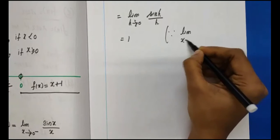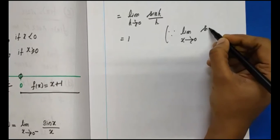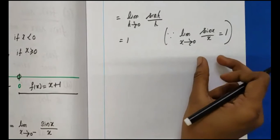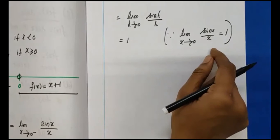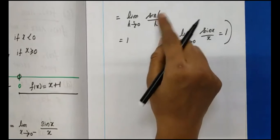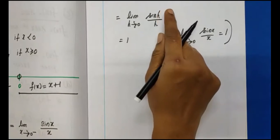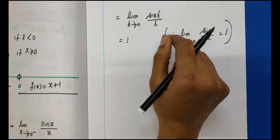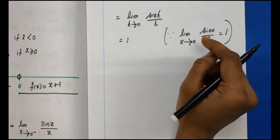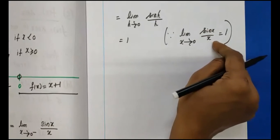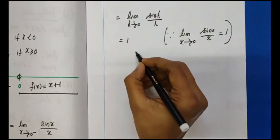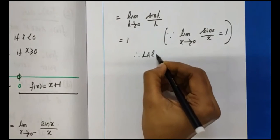We apply the standard result: limit x tends to 0 of sin x by x is equal to 1. If you substitute sin 0 by 0, that is an indeterminate form. By applying this result, the value is equal to 1. Therefore, the left-hand limit value is equal to 1.